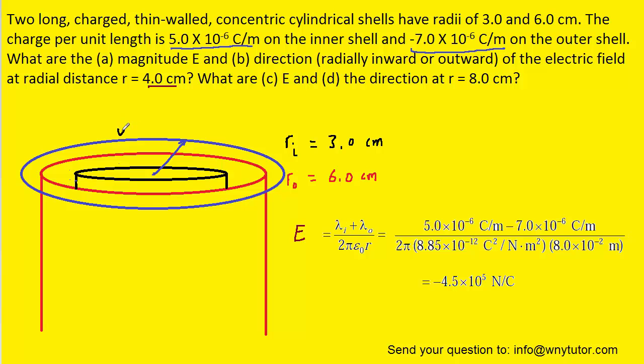The negative sign indicates that the electric field is pointing radially inward. So the direction, which is part D of the question, will have to be given as inward. The magnitude of the electric field would just be positive 4.5 times 10 to the positive 5 newtons per coulomb, because magnitudes are just the value only without that negative sign.